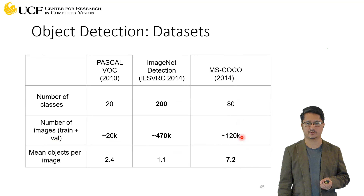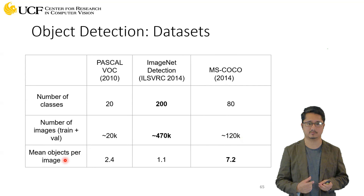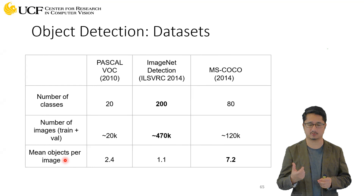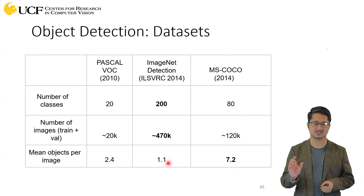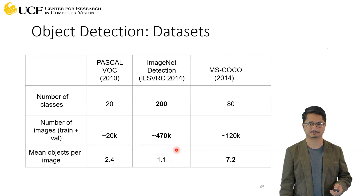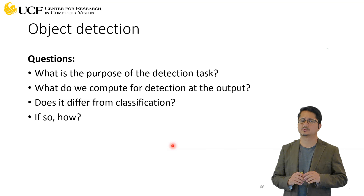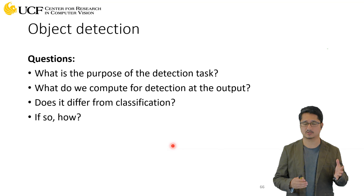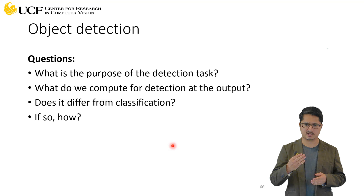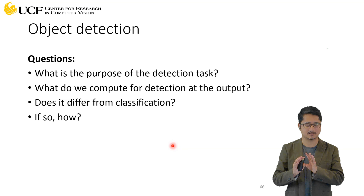Any problem you solve in deep learning requires datasets to train your networks. We have Pascal VOC, ImageNet Detection, and MS COCO. MS COCO is probably the most popular for object detection. These differ in number of classes — how many different object categories — and total number of images. Pascal VOC has roughly 20,000 images, ImageNet has about half a million, and MS COCO is also large with over 100K images. The table also shows average objects per image: MS COCO has a much higher average, indicating dense scenes, whereas ImageNet tends to focus on a single object with a much lower average.